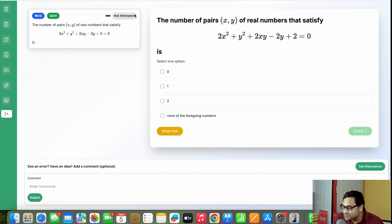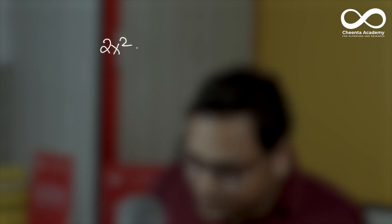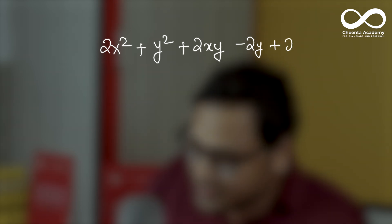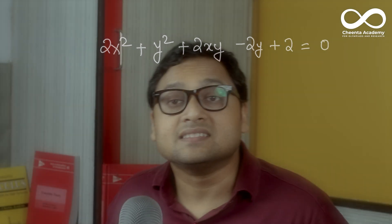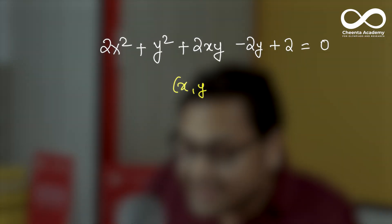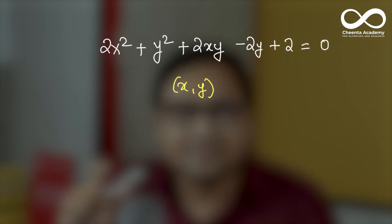So let's see. What does this problem say? The problem says that there is a quadratic equation in two variables. It says that 2x squared plus y squared plus 2xy minus 2y plus 2 is equal to 0. This is the quadratic equation. We want to find out all solutions of this equation. So all real numbers x and y which satisfy this equation. The way we are going to approach it is like this.